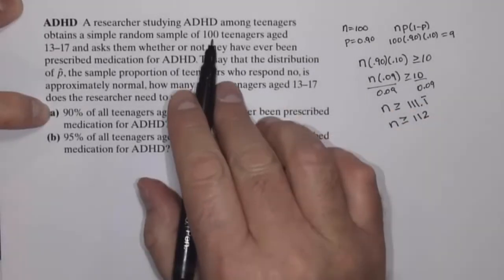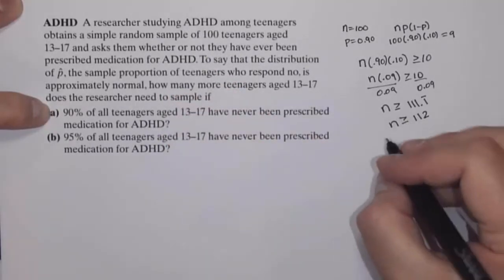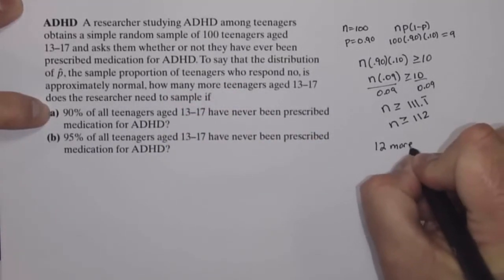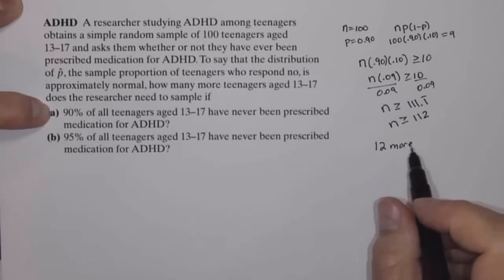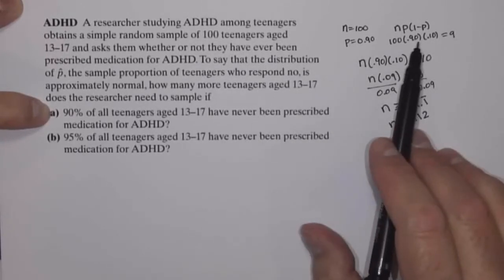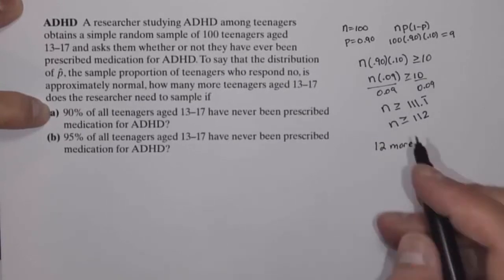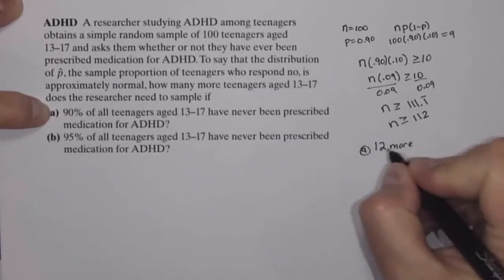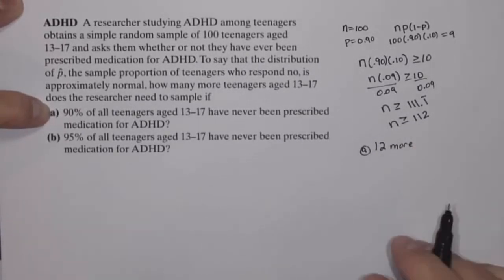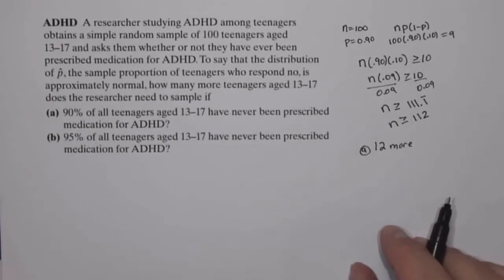So if we started with a sample of 100, we would need 12 more to be added to our sample size in order to say that this sampling distribution of p-hat would be normal. So our answer to Part A: we would need 12 more teenagers added to our sample so that we know for sure we have a normal distribution.